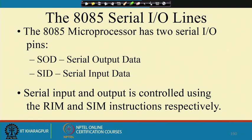In 8085, the serial input-output operations are performed by two pins: one is known as the serial output data or SOD, and the other is the serial input data or SID. These two are for serial input and output, and the operations are controlled by the instructions RIM and SIM — read interrupt mask and set interrupt mask.